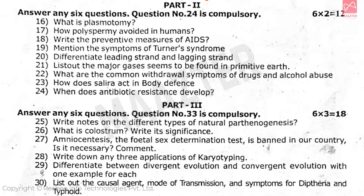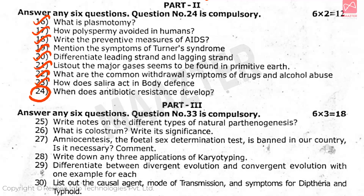Next is Part 2, which has a total of 9 questions. You need to answer 6 questions, each carrying 2 marks, for a total of 12 marks. Question 24 is a compulsory question. The topic is: When does antibiotic resistance develop?